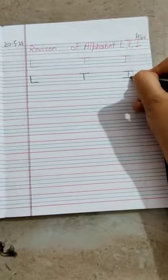Today we are going to do revision of alphabet L, T, I. How to write alphabet L: standing line, slipping line, L. Slipping line, standing line, T. Slipping line, standing line, again slipping line, I.